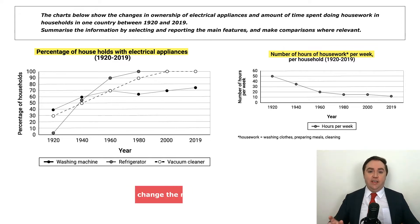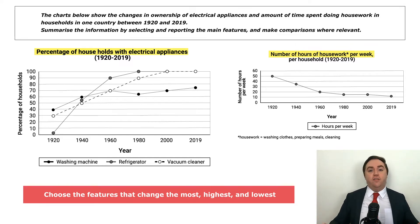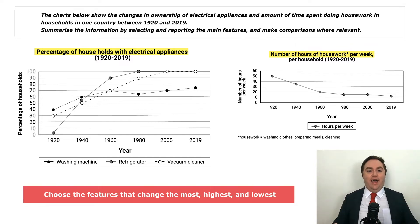My advice is this: first, choose the features that change the most; then, the features that are the highest; and last, the features that are the lowest.